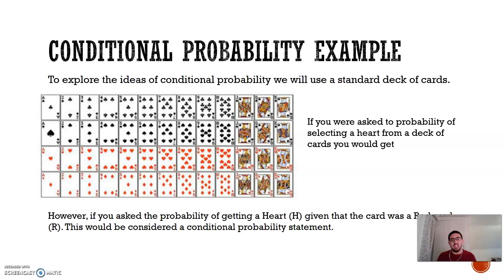In order to explore some of the ideas of conditional probability, we're going to use a standard deck of cards. There's a picture of cards in case you don't know what is inside a standard deck. If you were asked the probability of selecting a heart from a deck of cards, you would get 13 out of 52. There are 13 hearts: ace, deuce, 3, 4, 5, all the way up to king, out of a total of 52 cards.